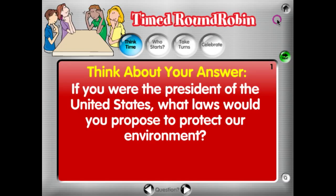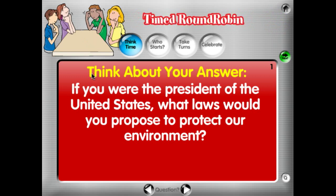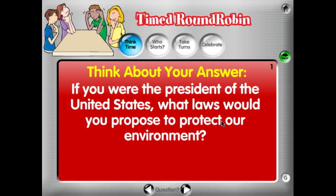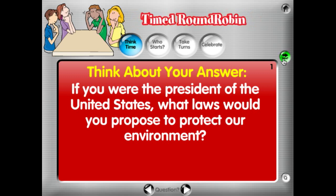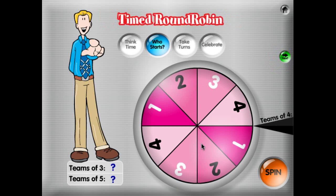We have 16 questions. Click play, and in Time Round Robin we have students seated in teams of four. The first thing they're going to do is all think about the answer to the question displayed for the entire class: if you were the president of the United States, what laws would you propose to protect our environment? A great thinking question — go ahead and hit next.